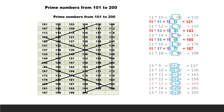Next, cross out multiples of 11. 11×10 = 110 — already crossed out. 11×11 = 121 — cross that out. 11×12 = 132 — even, already crossed. 11×13 = 143 — cross that out. 11×14 = 154 — even, already crossed. 11×15 = 165 — already crossed. 11×16 = 176 — even, already crossed. 11×17 = 187 — cross that out. 11×18 = 198 — even, already crossed. All 11 multiples are now crossed out.